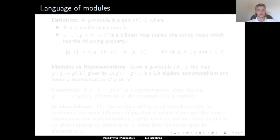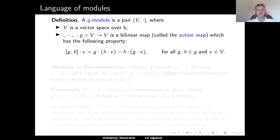In representation theory, there is an alternative language to speak about representations, and this is the language of modules. A module over a Lie algebra g is a pair consisting of a vector space v and the action map from g × v to v. This map is assumed to be bilinear — linear in both arguments — and it should also have the property described by a key equality.